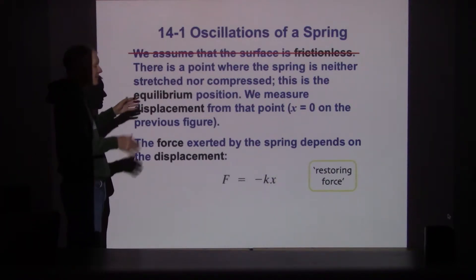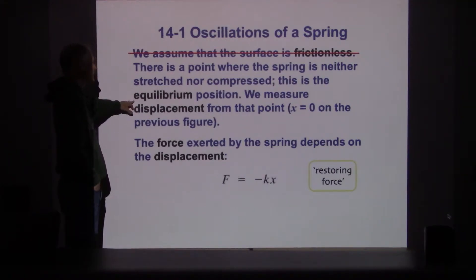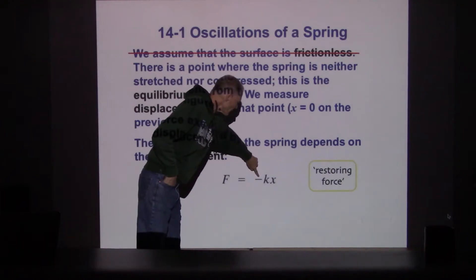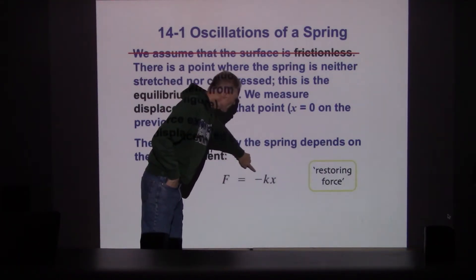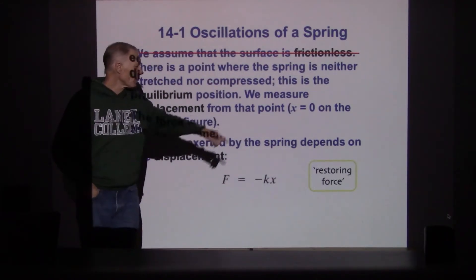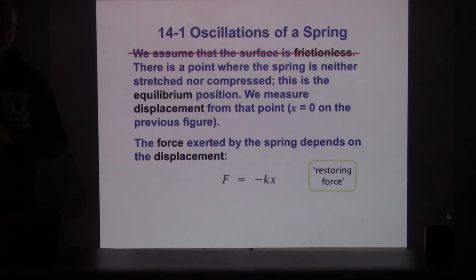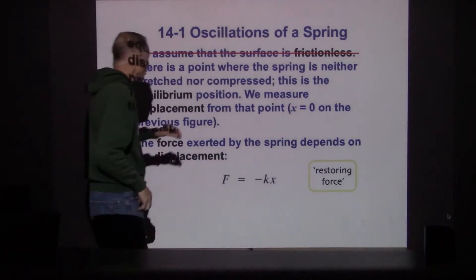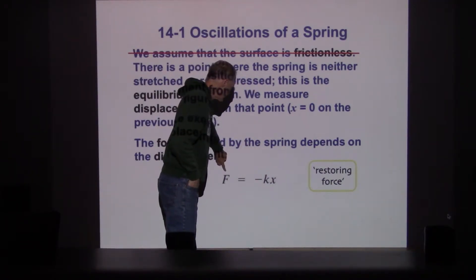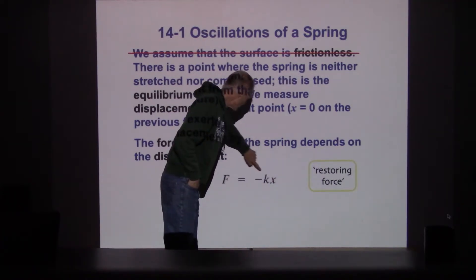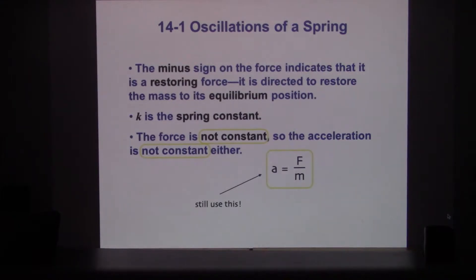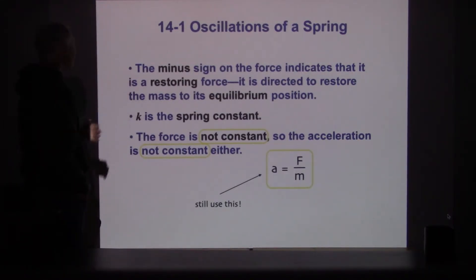There's a point where the spring is at its natural length - that's the equilibrium location - and we measure x from that point either left or right. They've explicitly put in the negative sign: the restoring force is minus kx. That characterizes a restoring force where the force is in the opposite direction compared with x. Mathematically, if x is positive, F will be negative; if x is negative, F will be positive. The minus sign indicates it's a restoring force directed oppositely to displacement.